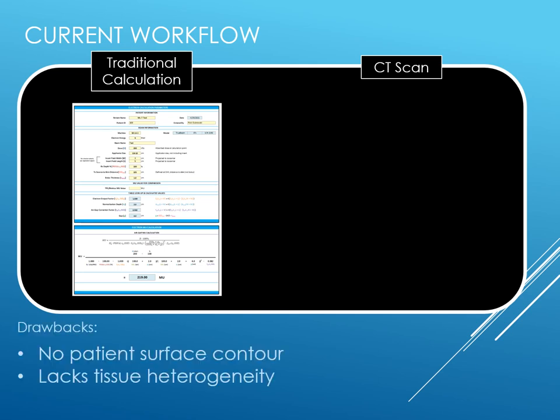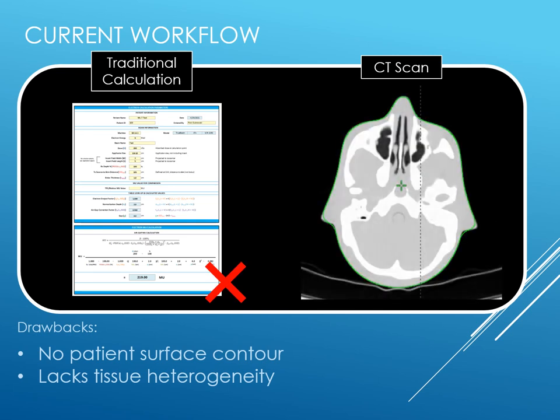These calculations do not account for shape changes, which can create significant local dose variations for treatments of the nose, ear, or lips. To obtain more accurate dosimetry, a treatment planning CT scan can be performed.